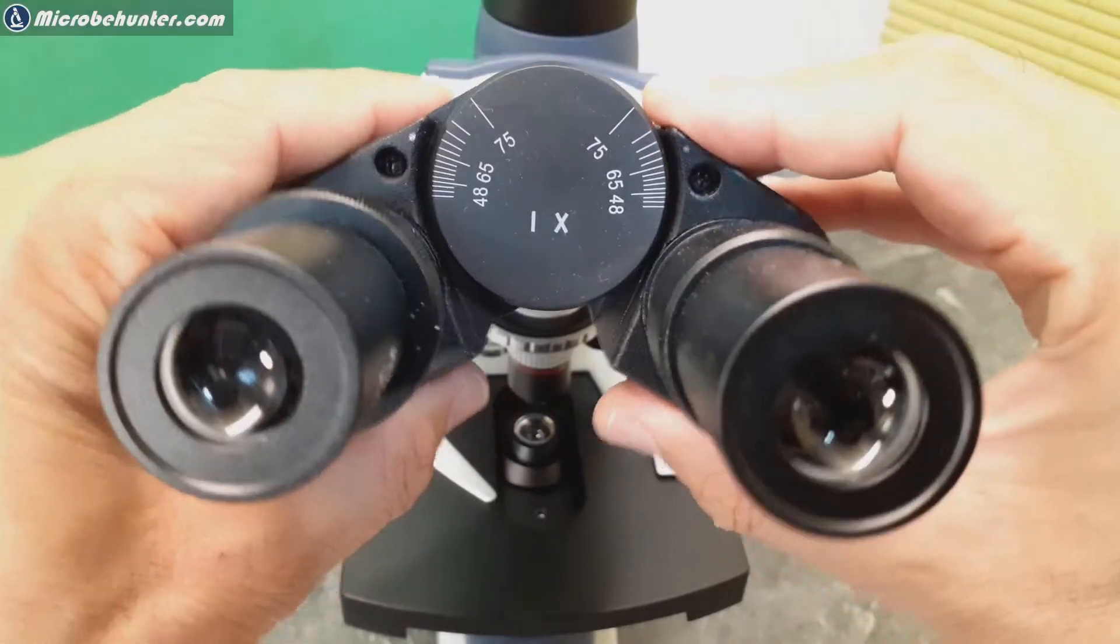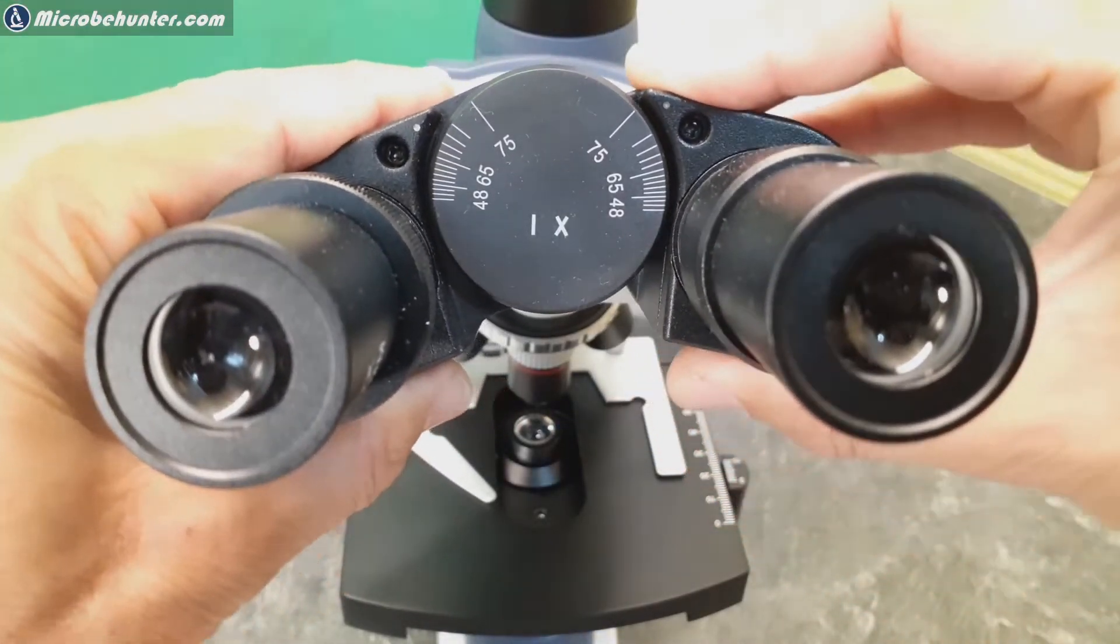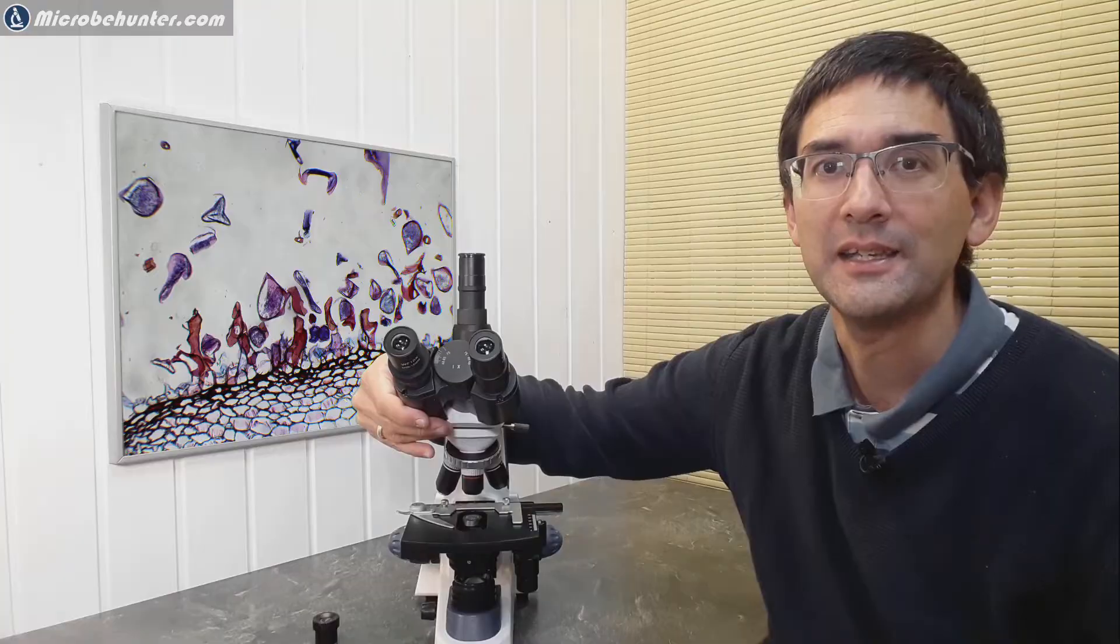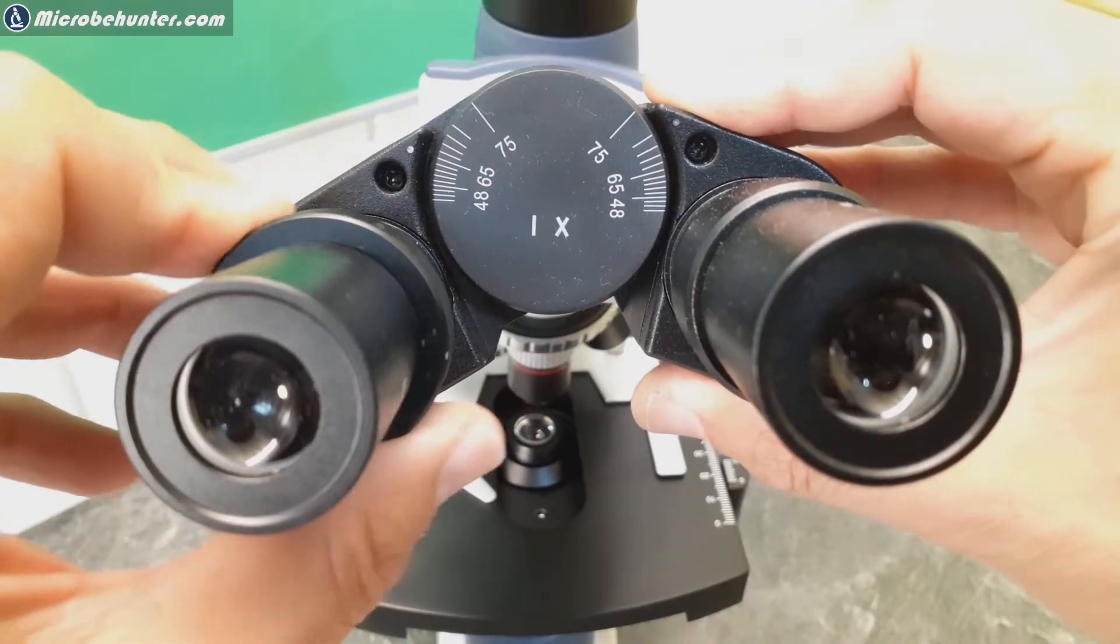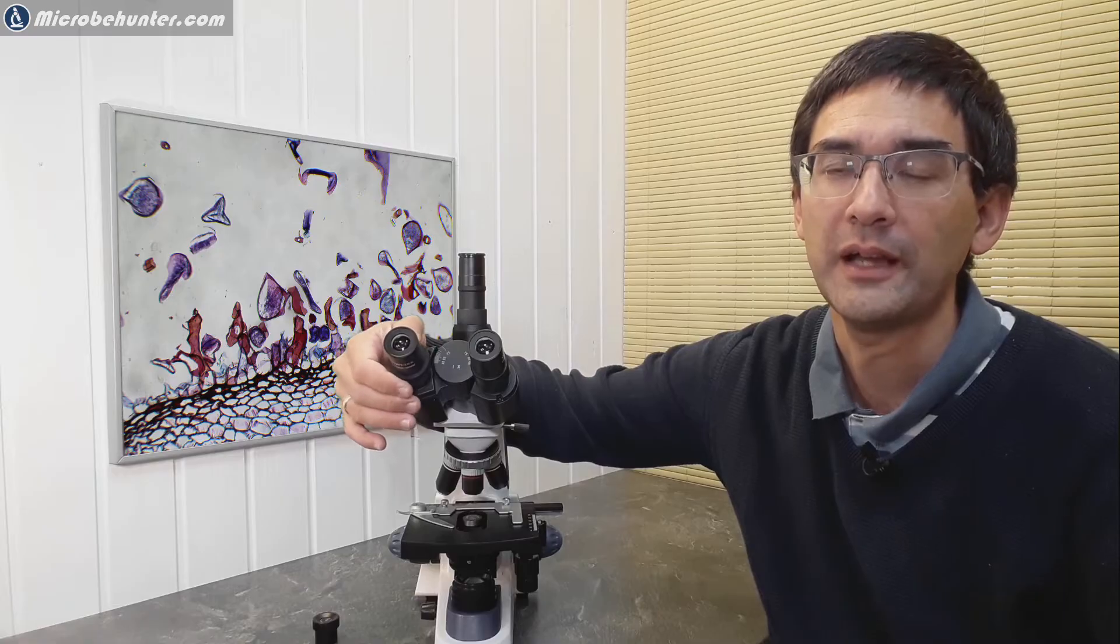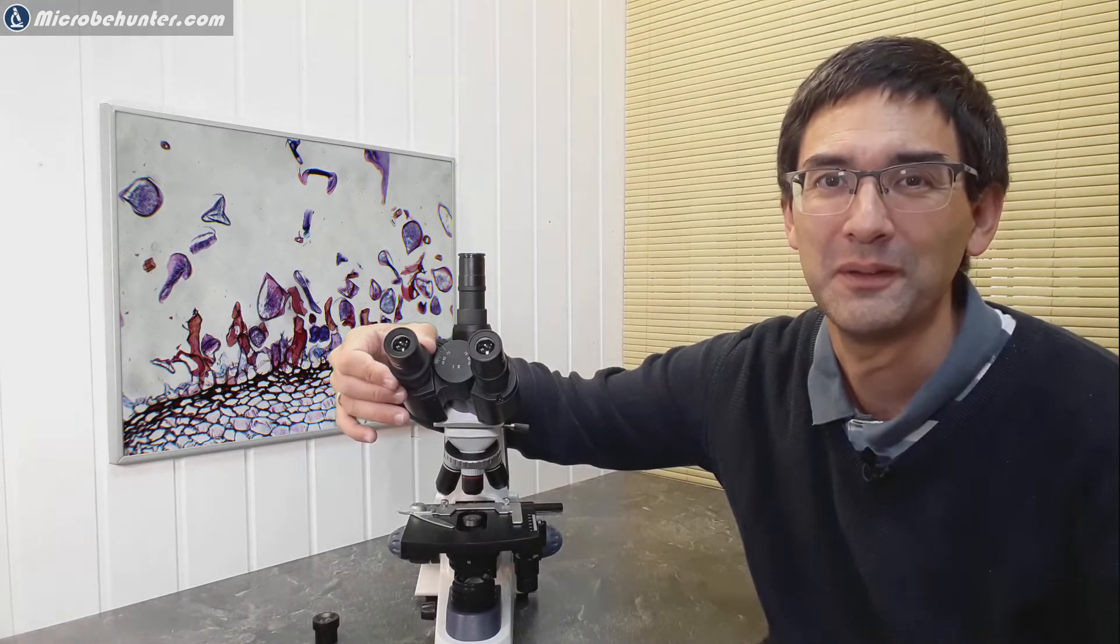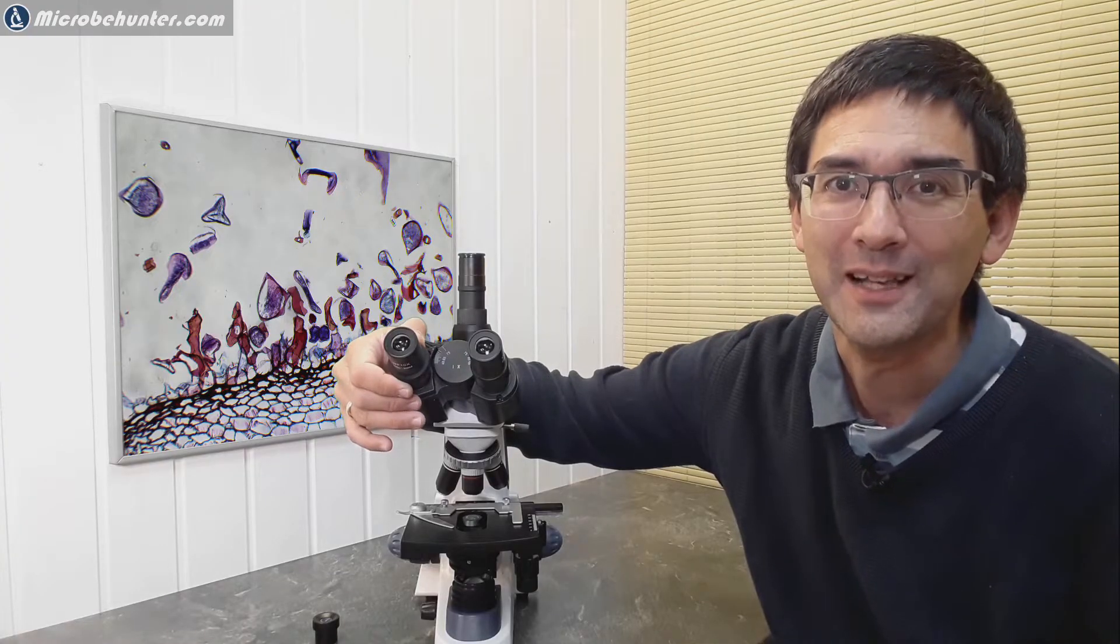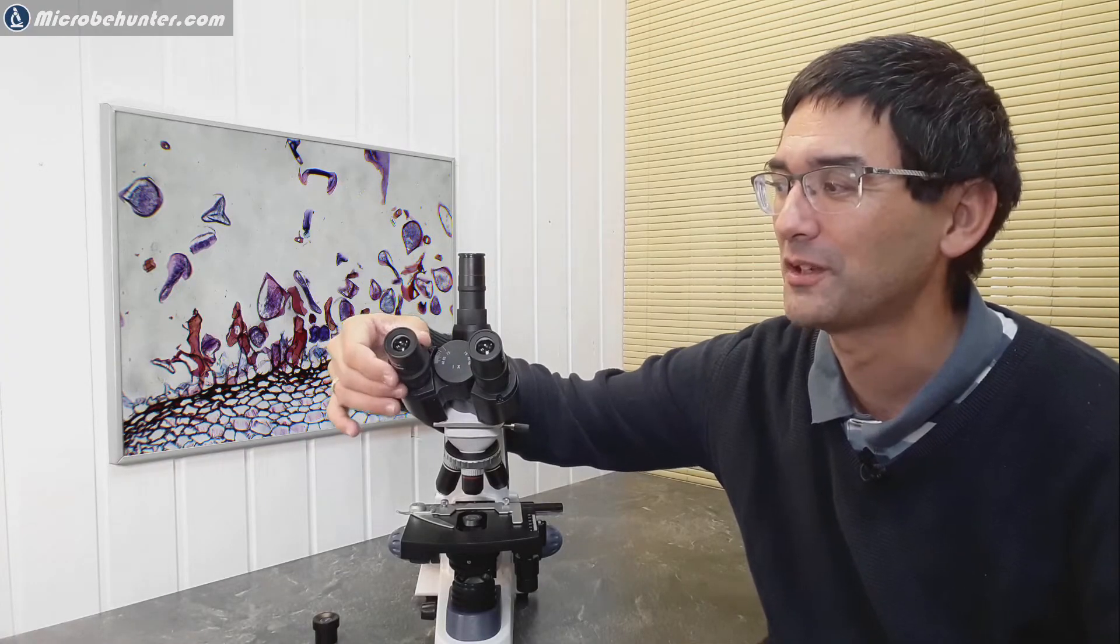It's also possible to adjust for differences in eyesight. There's the so-called diopter adjustment here on the left eyepiece. If you rotate the eyepiece, you can compensate for different vision. If you're wearing glasses like I'm doing, you just keep it set to neutral.